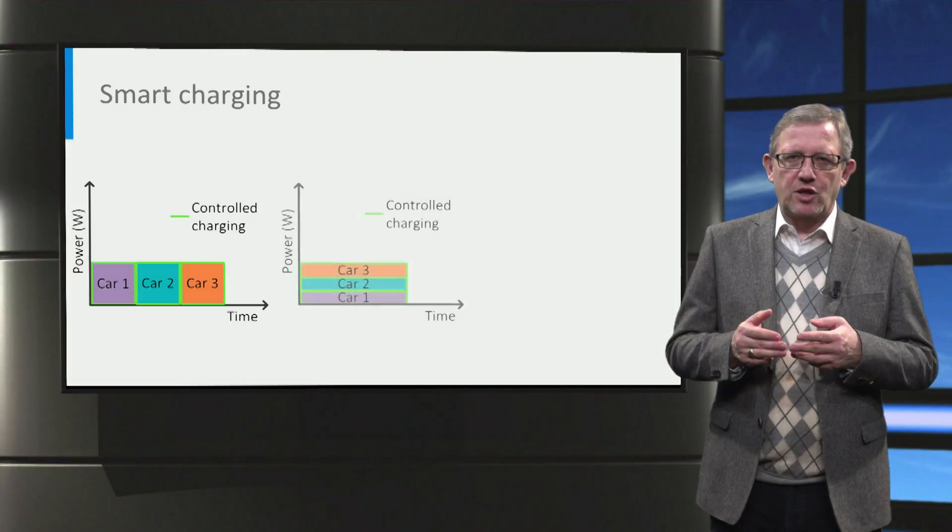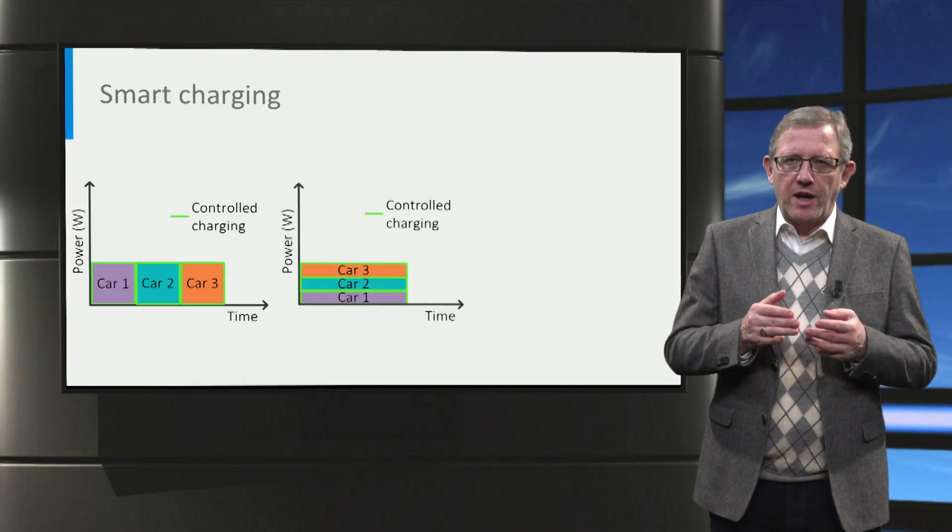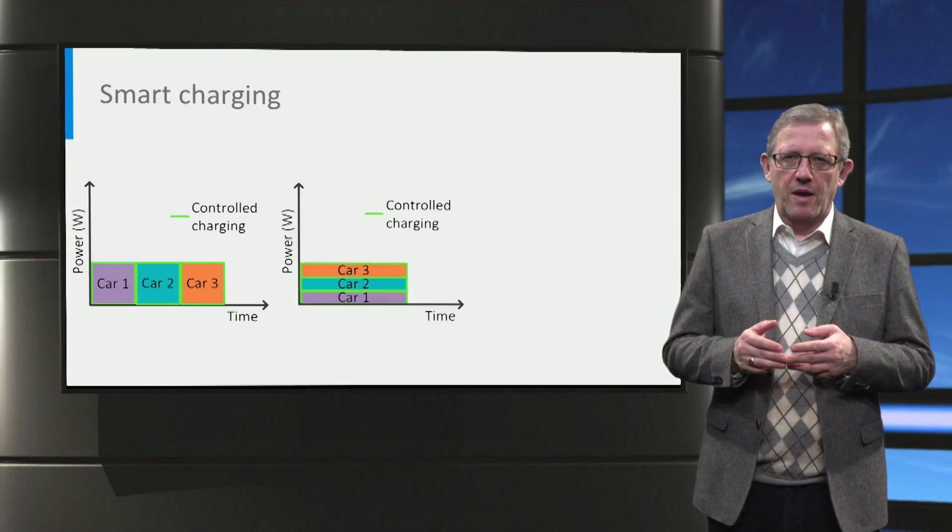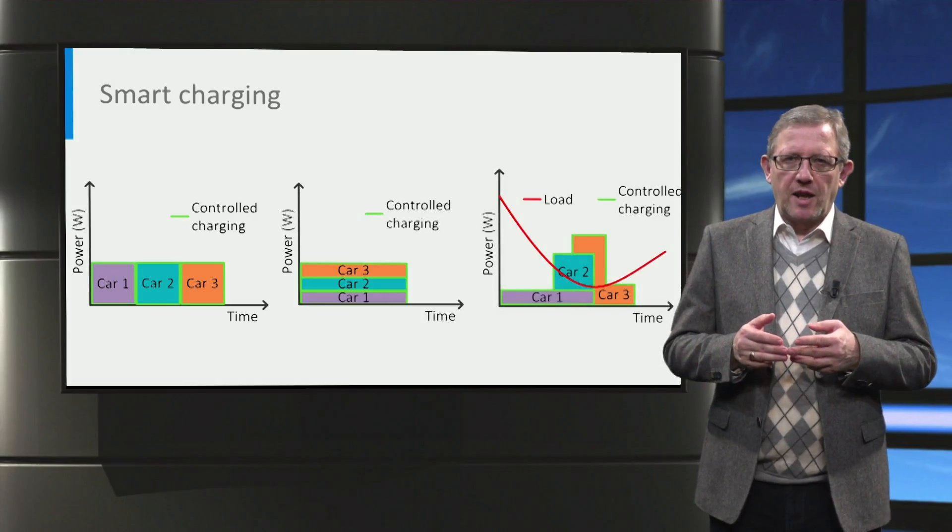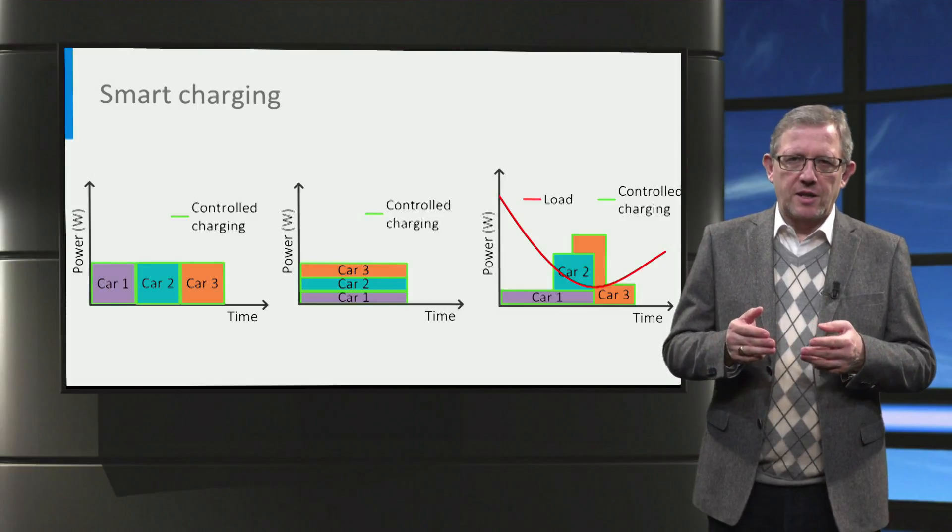Alternatively, the cars can be charged at the same time but with a lower power for each car, such that the charging is spread over the eight hours of work time. Or the smart charging system can monitor the electricity network and charge more cars when there is less demand on the electricity network.